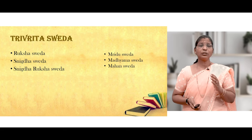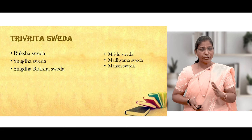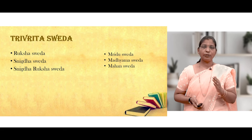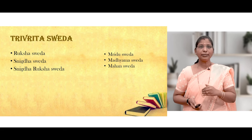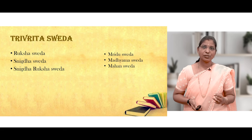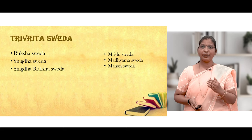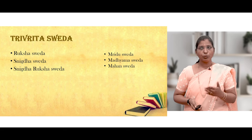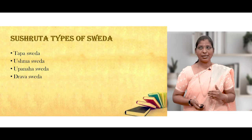There are three major types of Swedana — Trivrita Sweda — among which there are two subtypes: Ruksha Sweda, Snigdha Sweda, and Snigdha Ruksha Sweda; and the other classification includes Mrudu Sweda, Madhyama Sweda, and Mahana Sweda.